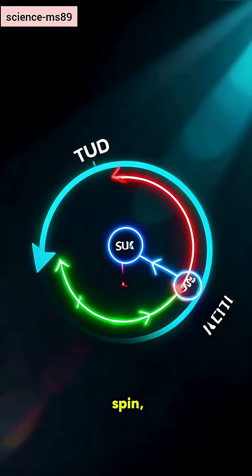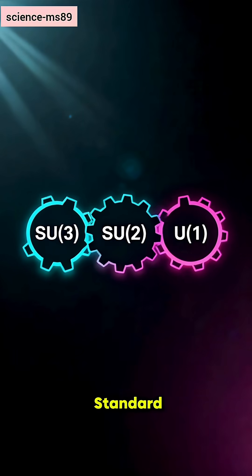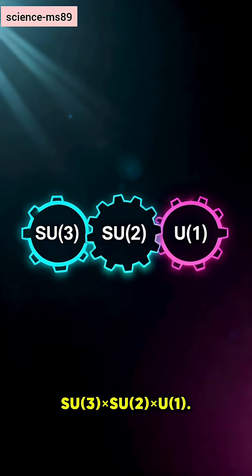SU2, force spin, SU3 for color. The standard model uses SU3×SU2×U1.